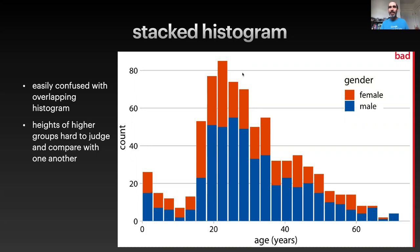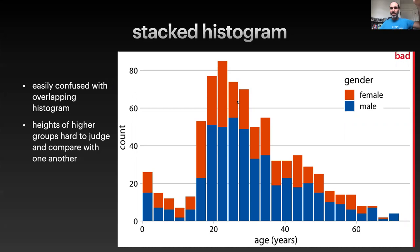This stacked histogram has the advantage that the overall histogram is the histogram of the overall data, so we can see that in the overall curve. We can easily see the first set of bars that are plotted and understand them. It has a distinct disadvantage, though, that it's harder to judge size within the second or third or fourth group you're stacking on top of each other. It gets progressively harder to see the shape of that distribution for the other groups.